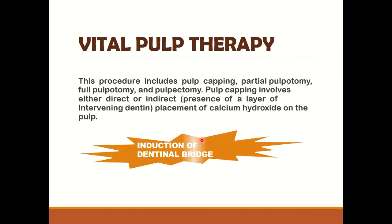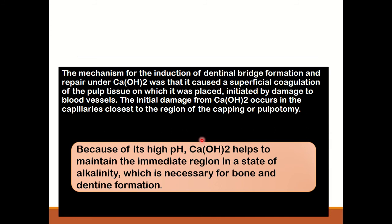The basic mechanism of all of these is to induce dental bridge formation. The mechanism is that calcium hydroxide causes superficial coagulation of the pulp tissue on which it is placed, and damage to the blood vessels. Because of its high pH, calcium hydroxide helps maintain the immediate region in a state of alkalinity, and this alkalinity is required for bone and dentine formation.